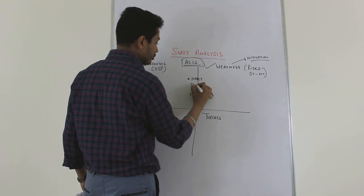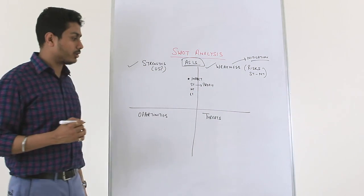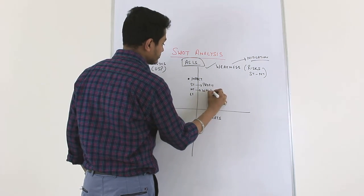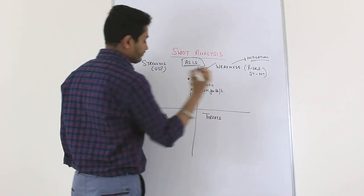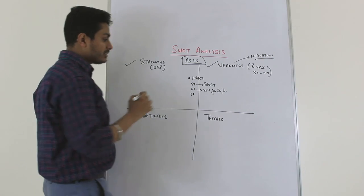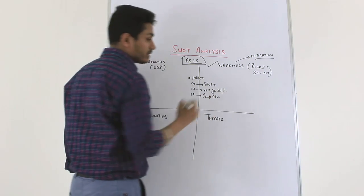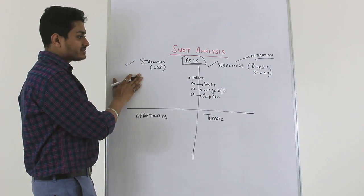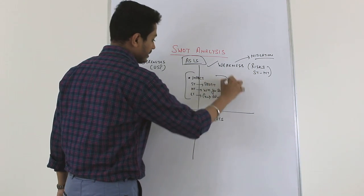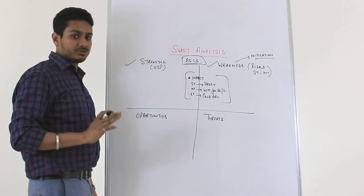When looking at the short-term element, we are asking whether it impacts the profit of the organization. The medium-term relates to wealth maximization for shareholders. The long-term component relates to competitive advantage for the organization over its competitors. Whatever is a strength, weakness, opportunity, or threat, the calibration must be around these three elements across short, medium, and long-term perspectives.